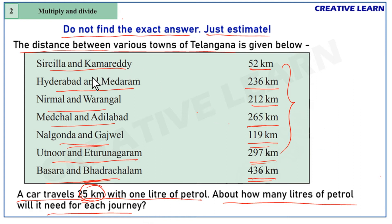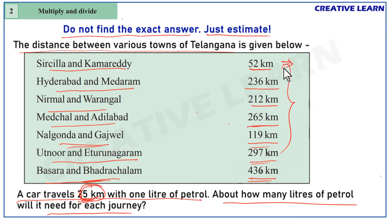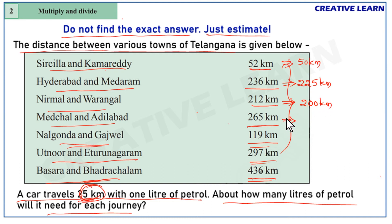Starting with Sirisilla and Kamareddy — the distance is 52 kilometers. Since we need no exact answer, I am taking multiples of 25, because one liter of petrol runs 25 kilometers. So I am converting all the distances into multiples of 25 for easy calculation. 52 kilometers is taken as 50 kilometers. 236 kilometers is nearer to 225 kilometers. 212 kilometers is nearer to 200 kilometers.